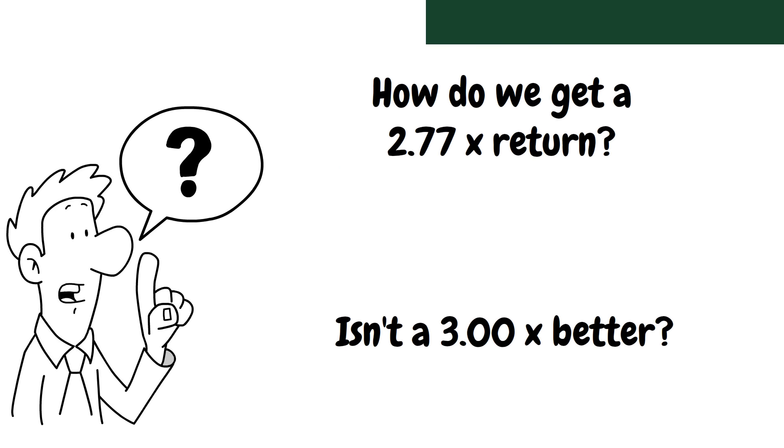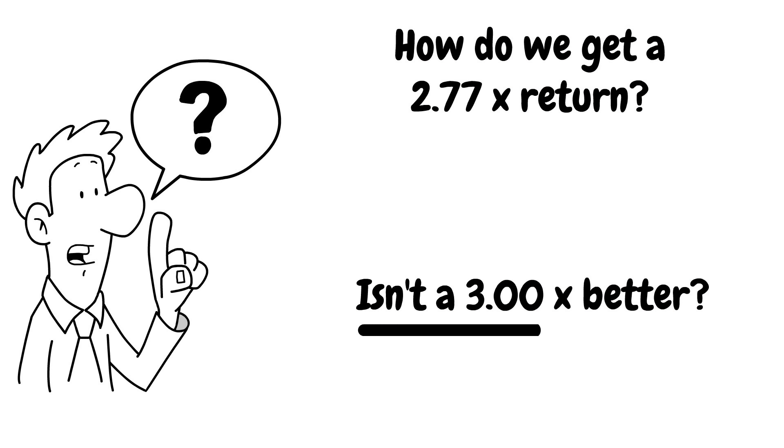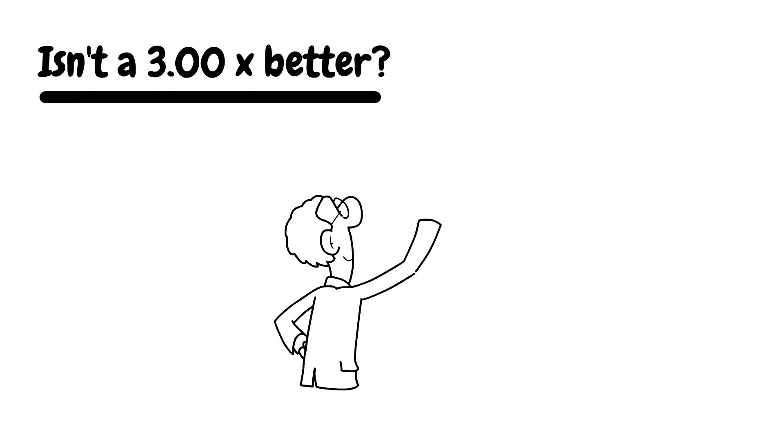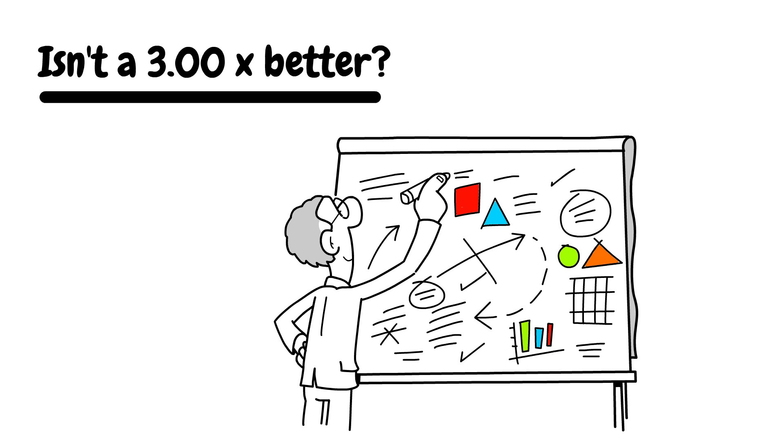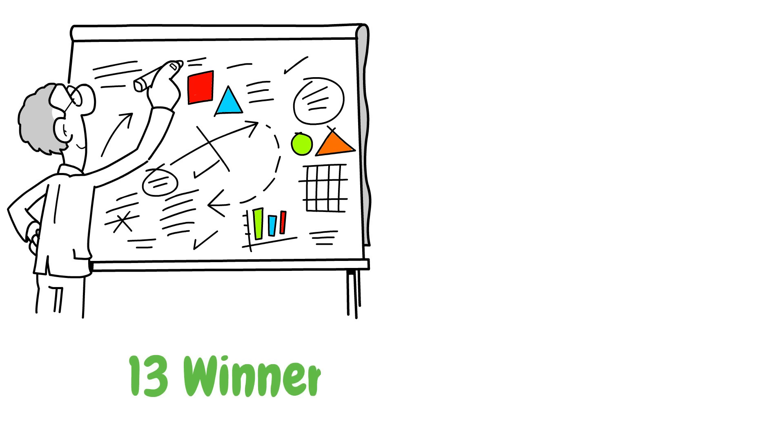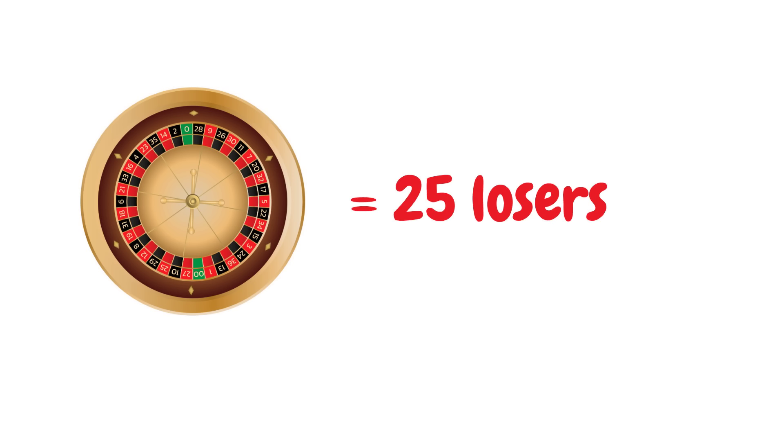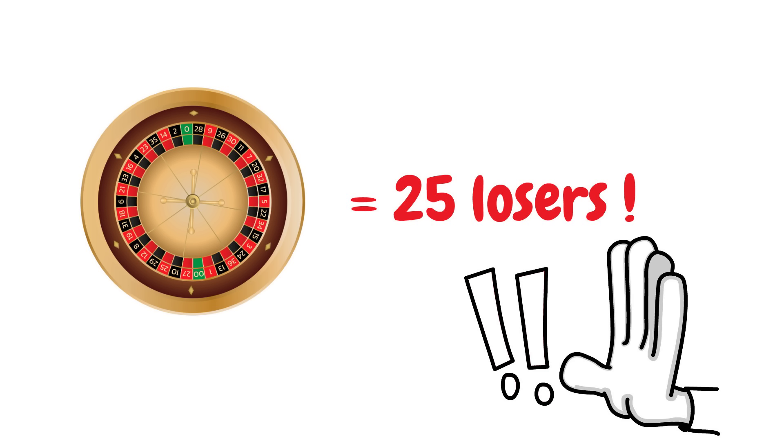So now let's answer the second question. Why don't we just bet on a dozen or a column where the payout is 3x rather than 2.77x? Let's run the numbers. 13 numbers that are winners means that 24 of them are losers. If you are playing on a double-zero roulette table, then you have 25 losing numbers, but please don't play double-zero roulette.